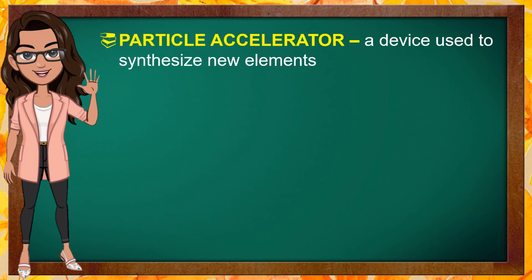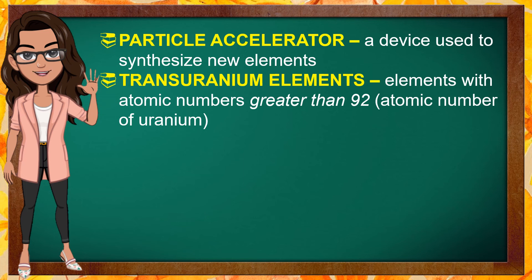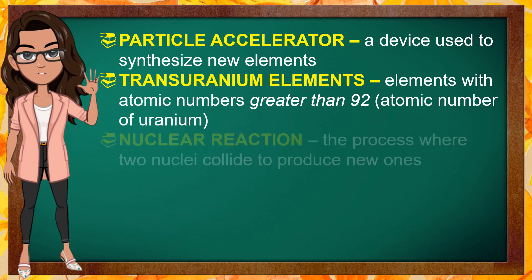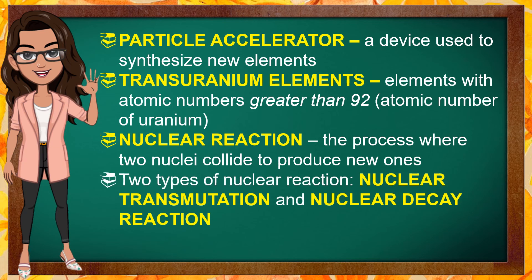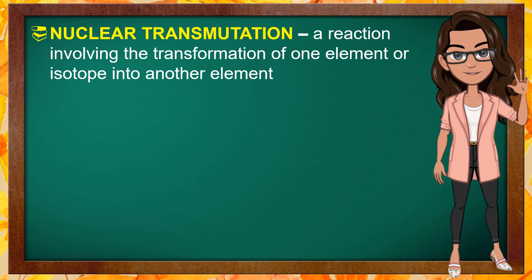A particle accelerator is a device used to speed up protons to overcome the repulsion between the protons and the target atomic nuclei by using magnetic and electrical fields. It is used to synthesize new elements. Elements with atomic numbers greater than 92, the atomic number of uranium, are called transuranium elements. They were discovered in the laboratory using nuclear reactors or particle accelerators. Nuclear reaction is the process where two nuclei collide to produce new ones. There are two types of nuclear reaction: nuclear transmutation and nuclear decay reaction.